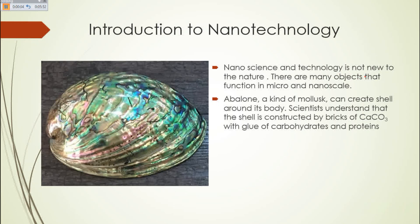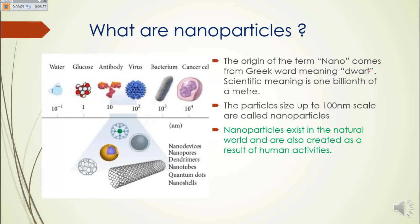The abalone, a kind of mollusk, can create a shell around its body. Scientists understand that the shell is constructed by bricks of calcium carbonate with the glue of carbohydrates and proteins. The origin of the term 'nano' comes from the Greek word meaning 'dwarf,' and its scientific meaning is one billionth of a meter.